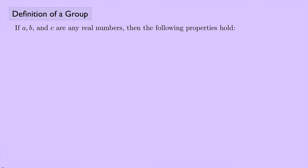Now I want to define one of the most important concepts in abstract algebra, and that's the concept of a group. But before I formally define a group, let's look at something that you might already be familiar with. If A, B, and C are any real numbers, then the following properties hold — properties that you probably saw in your earlier studies of algebra.